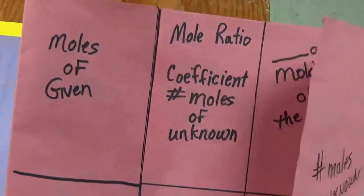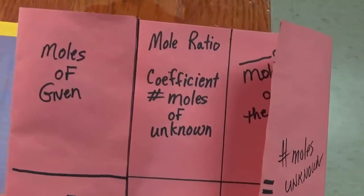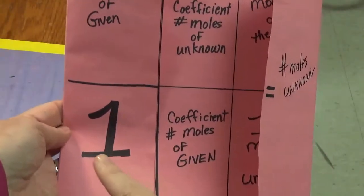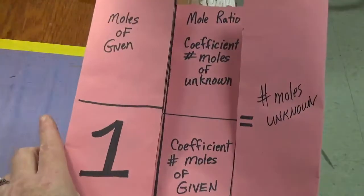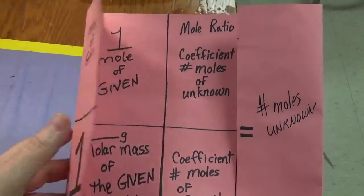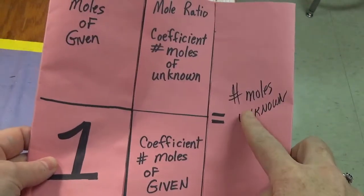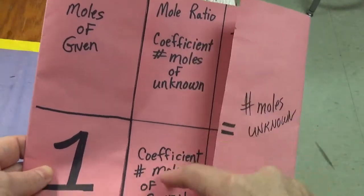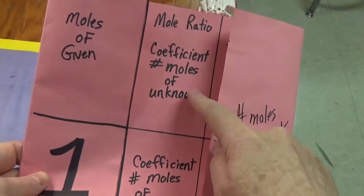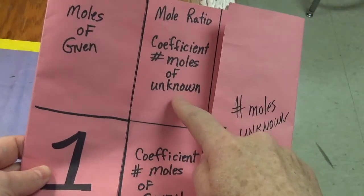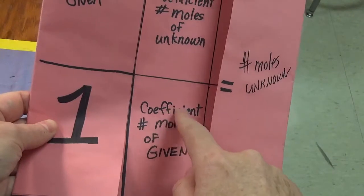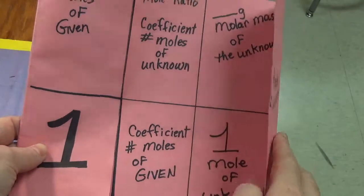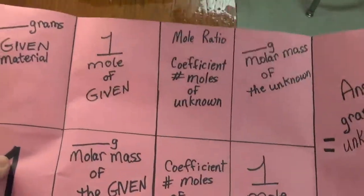On the first column you want to have 'moles of given' at the top, and a 1 at the bottom when it's closed. The other side when it's closed should say 'number of moles of unknown.' In the middle, this is the mole ratio step with the coefficient number of moles of unknown on top, and the coefficient from the equation to tell the number of moles of given on the bottom. Pause this video and replay as much as needed.